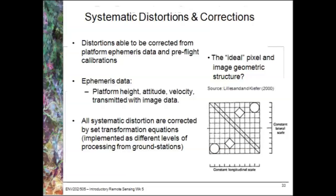What we want to do is remove any systematic distortions and provide these corrections. These are distortions that can be corrected using platform ephemeris data and pre-flight calibrations — things we know about based on what's happening with the platform at the time of image acquisition. This might relate to platform height, attitude in terms of roll, pitch and yaw, and the velocity of the aircraft at that time. All this is transmitted with the image data in metadata files, and these distortions are corrected using set transformation equations.